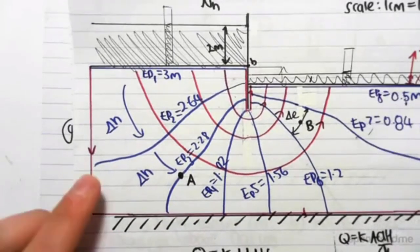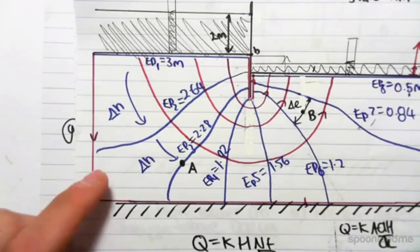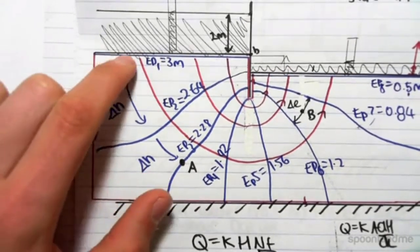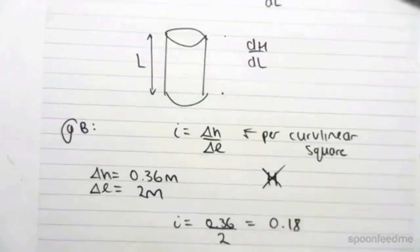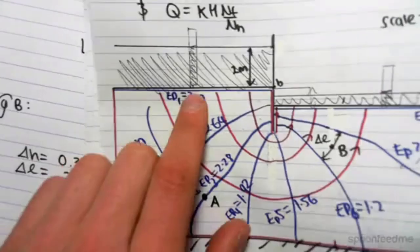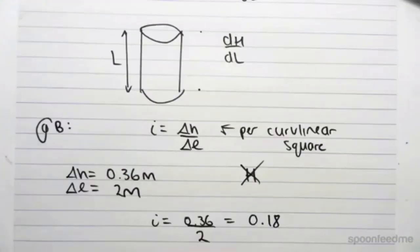Once again, just to clarify this one more time, the small change in h is the head drop from EP to EP, and the big H is the total head drop from here to here. So just keep that in mind.